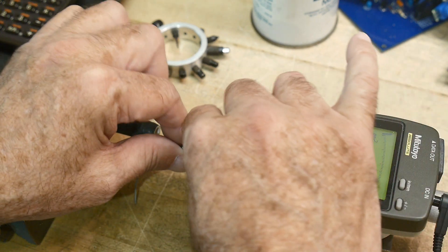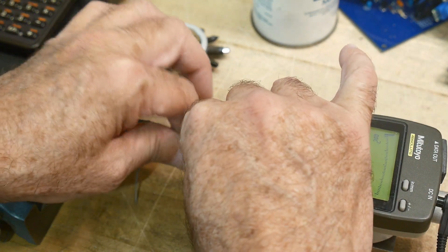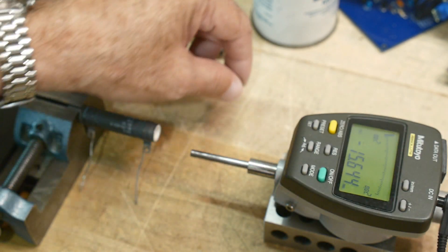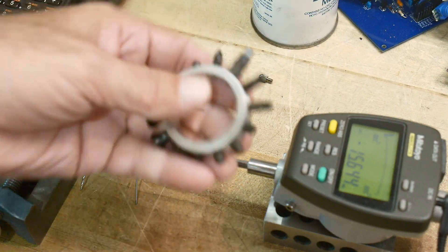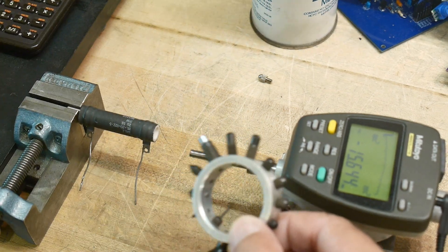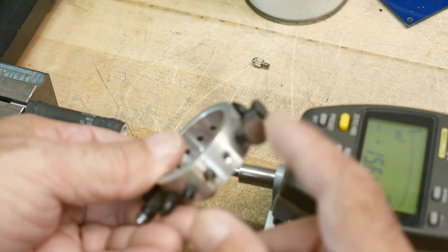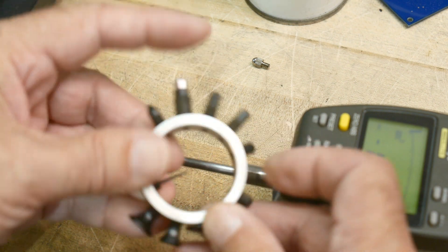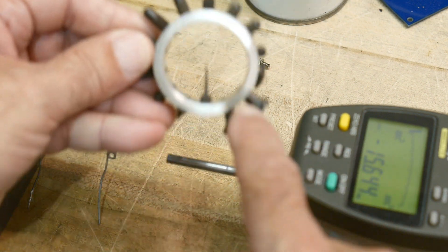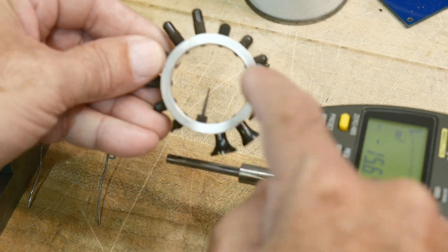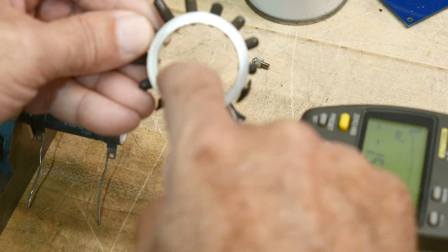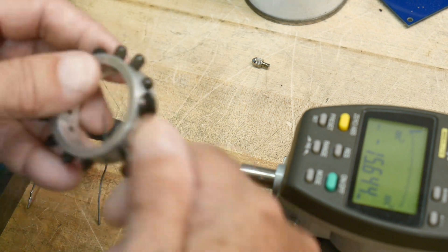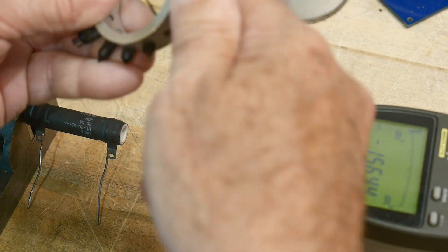One of the reasons I wanted to film this was to let people know that the tips on these indicators are detachable, and you can get a set of different tips. There's big ones and little ones and sharp ones. This one is spring-loaded. There's one that's really deep that you can reach into crevices. Some are round, some are pointy.